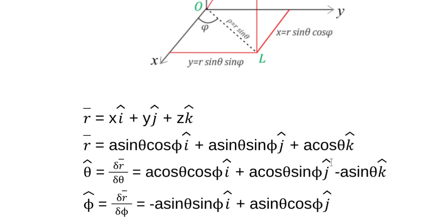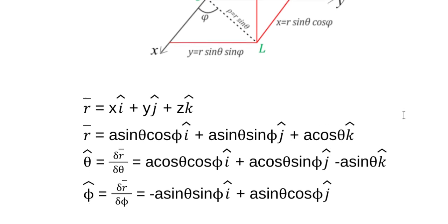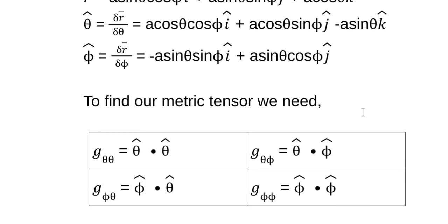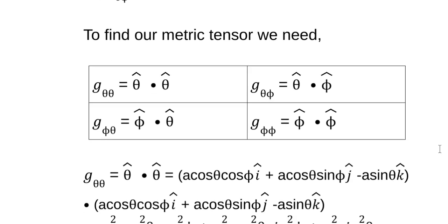So now the next step is to use these basis vectors to find the metric tensor. The metric tensor is defined as the dot product of the basis vectors — all the permutations. Since we only have two components, we have four elements of our metric tensor. So now we've got to take the dot product of all of these. As an example, we have the dot product of the theta basis vector with itself. Now remember, this is an orthonormal reference frame we're working in.